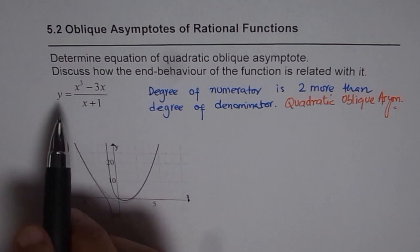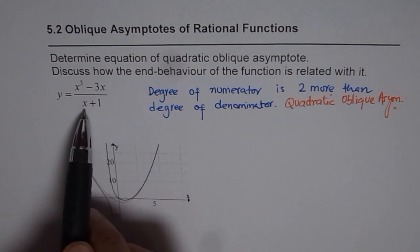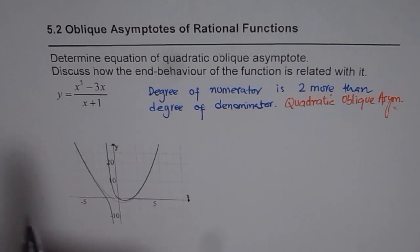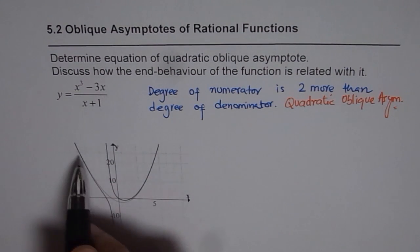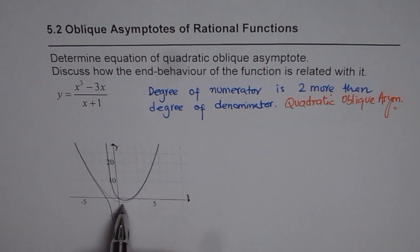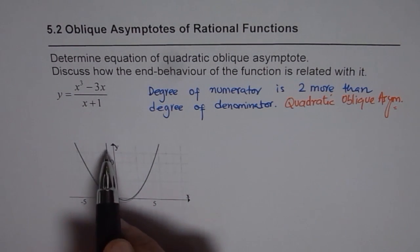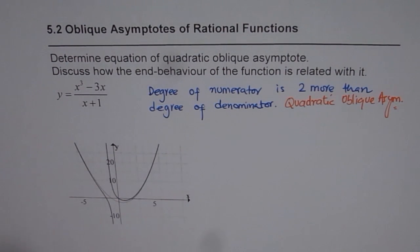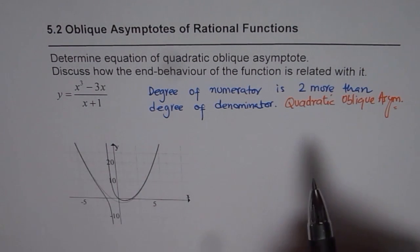The degree of the numerator is 3 and the degree of the denominator is 1. So if I divide the numerator by the denominator, I will get a quadratic equation in the quotient. I have also drawn the function here alongside a parabola. Our function, shown in bold, approaches the parabola as x approaches infinity, and that is what we mean by a quadratic oblique asymptote. We will be clear about it once we divide and find that quadratic function.